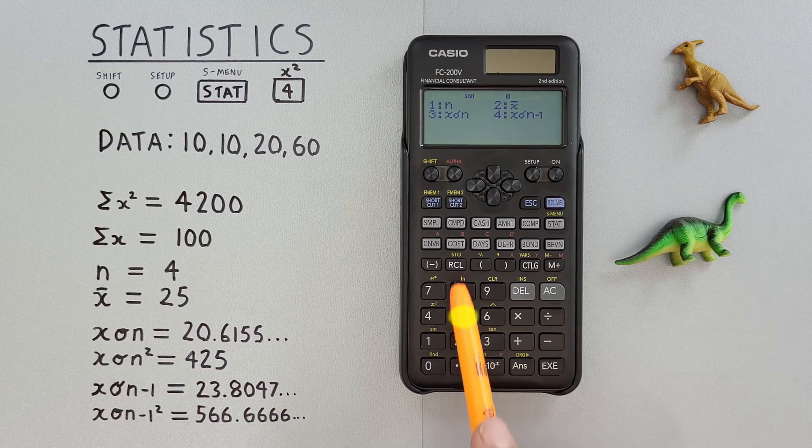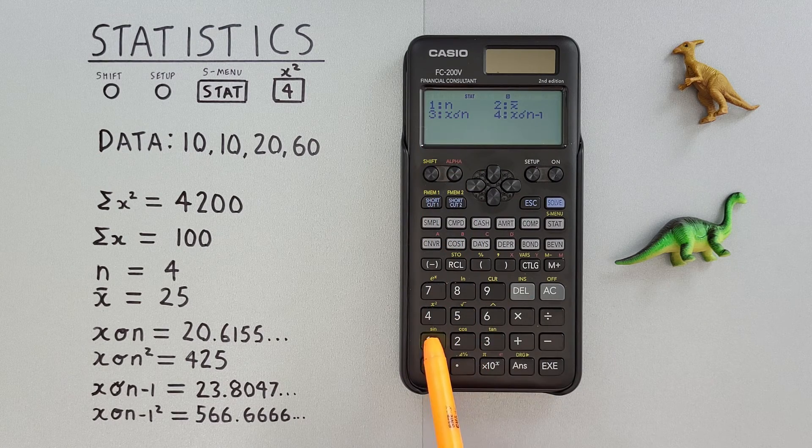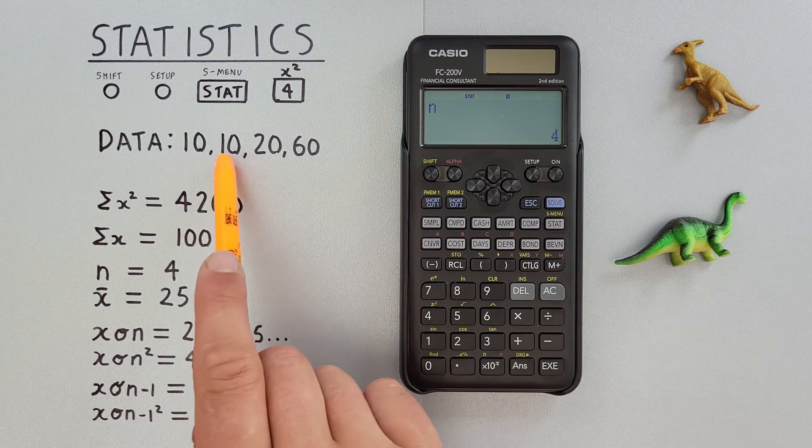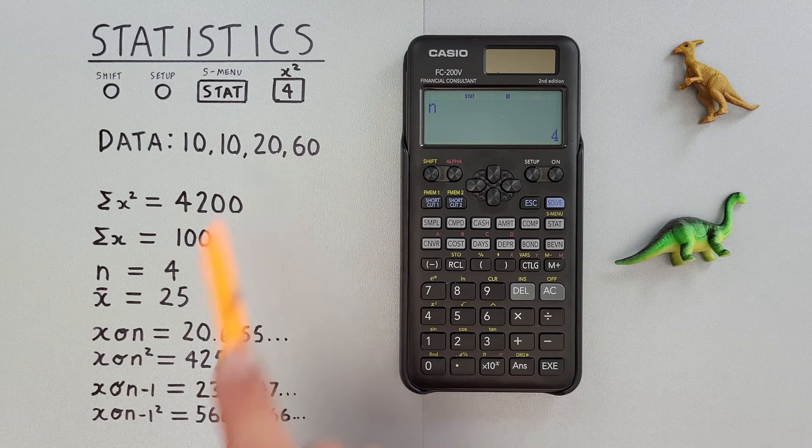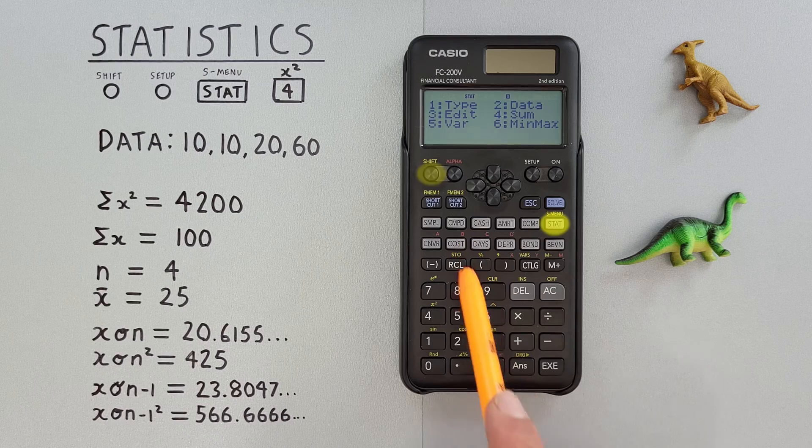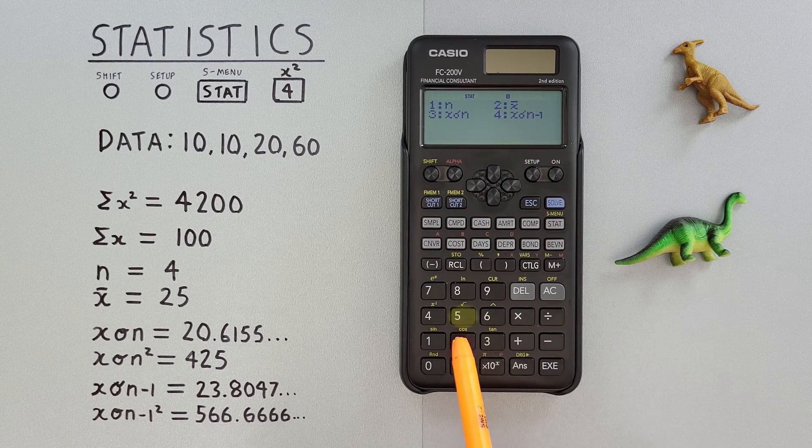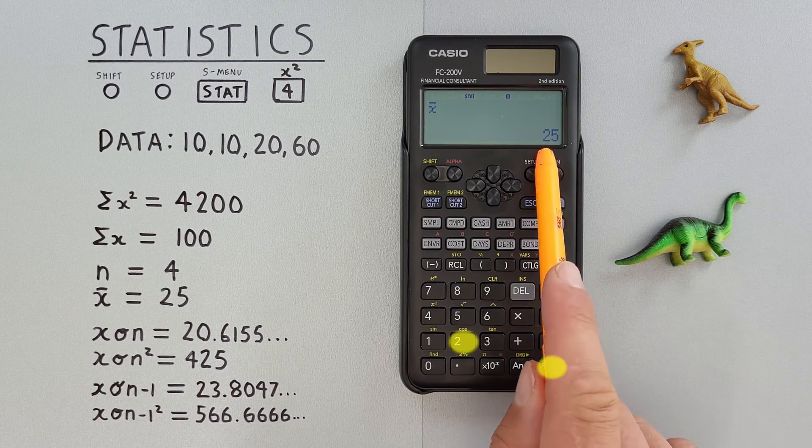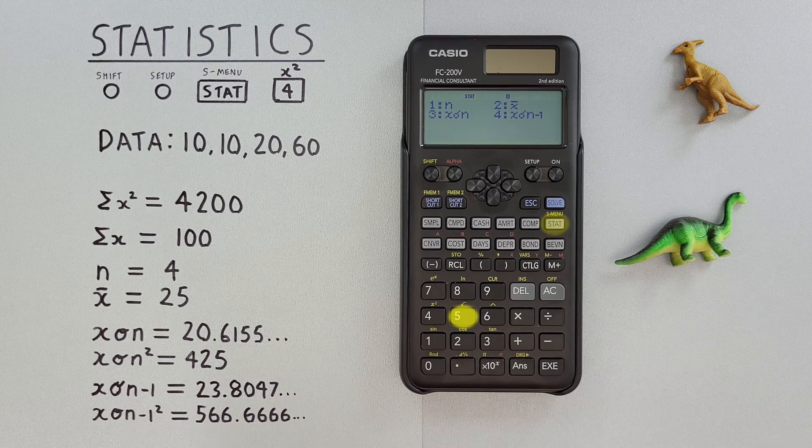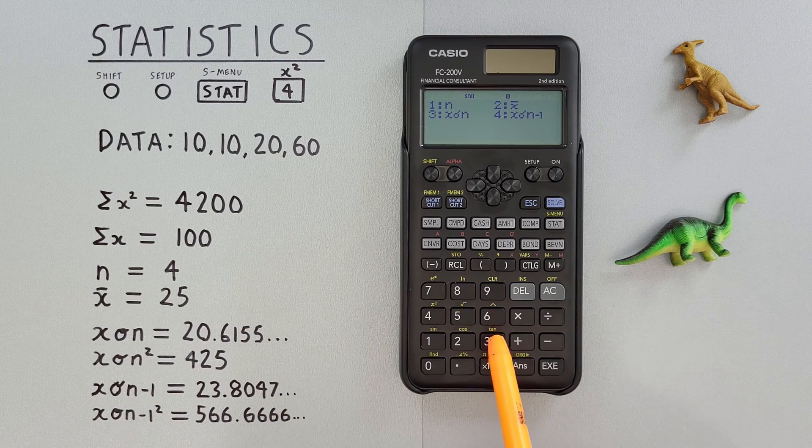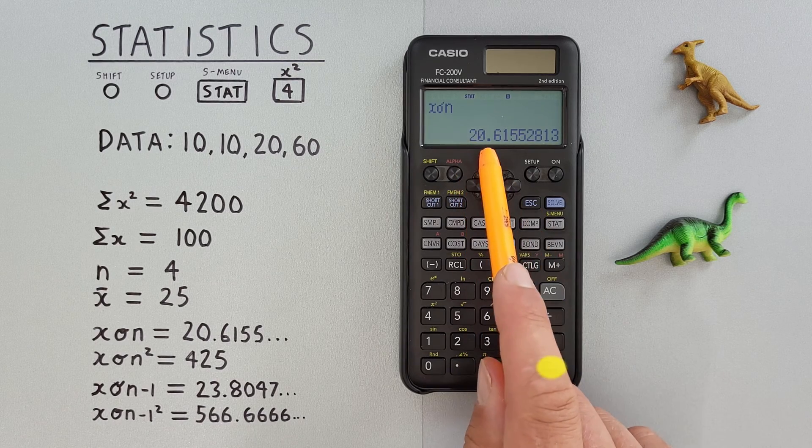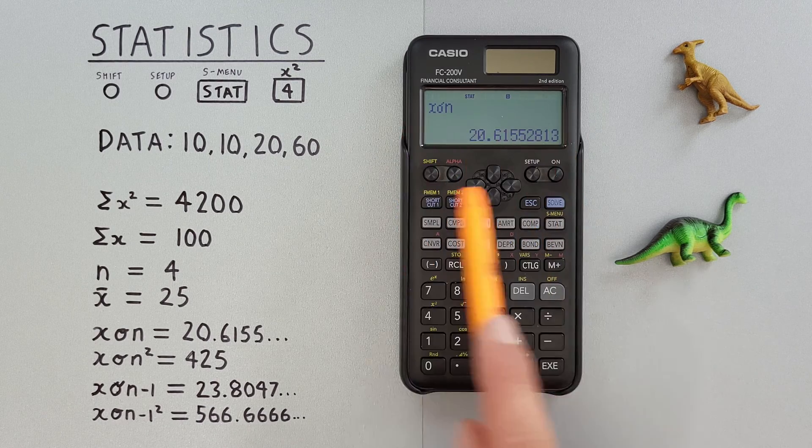And we choose number one, the number of variables. We see we're getting four again, even though we only entered three individual different numbers. Our mean is still 25, and our population standard deviation is still 20.6155, so we know that worked.